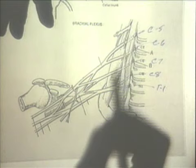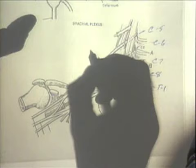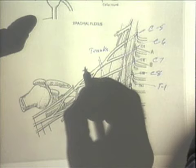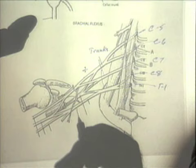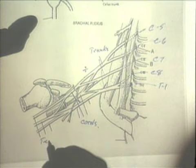These rami form trunks — superior, middle, and inferior. The trunks then mix into divisions, and from the divisions we form a series of cords, which then give rise to terminal nerves.